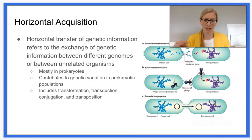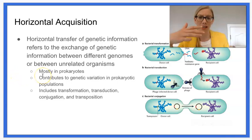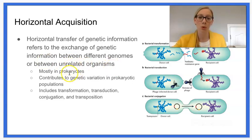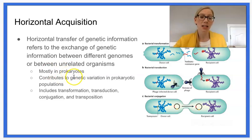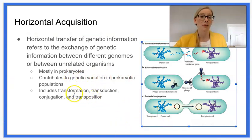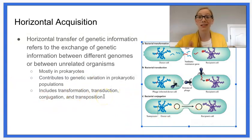We also talk about something called horizontal acquisition. Horizontal acquisition is really just the transfer or exchange of genetic information between different or unrelated organisms. Most of the time we talk about this in prokaryotes, so typically we're talking about bacteria, and it contributes to genetic variation in these prokaryotic populations. There are different ways we can go about it: transformation, transduction, conjugation, and transposition — but really they're all just ways of exchanging information.